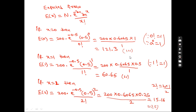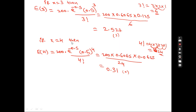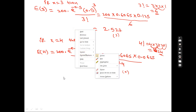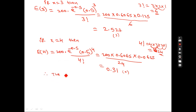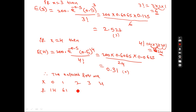We round the expected frequencies so that the total equals 200. The value 121.3 is rounded to 122 for adjustment. Therefore, the expected frequencies are: for x = 0: 121, x = 1: 61, x = 2: 15, x = 3: 3, x = 4: 0. This is the final answer for this question.